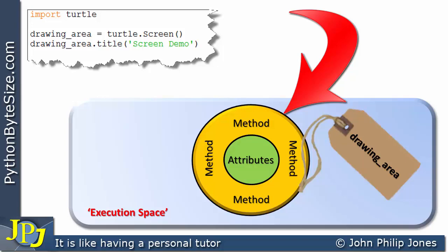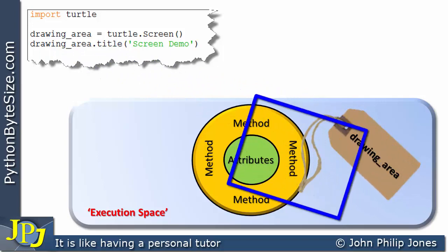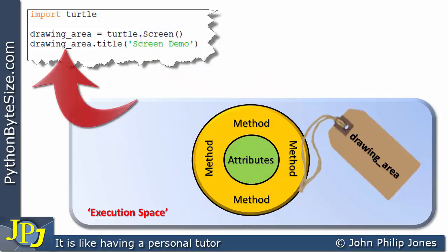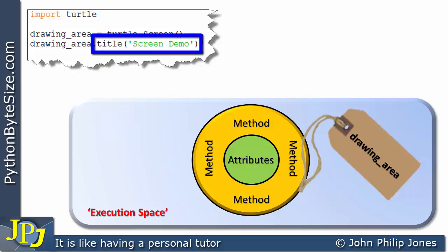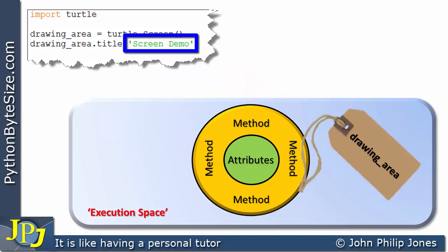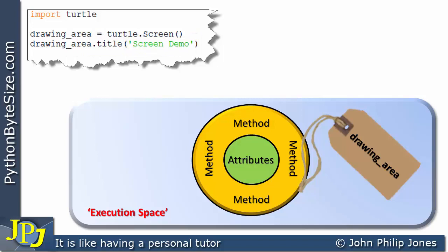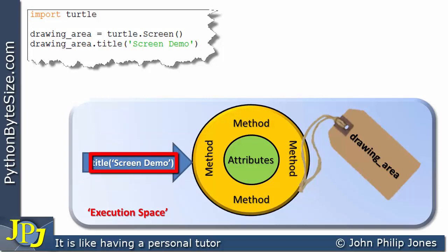As an object-oriented programmer, we now use the object. Let's refer to this line of code — this is an example of a message. This is referring to the object, because this is the name of the object, which is bound to this object here. Following this name, you can see we have the full stop — dot notation. This is going to invoke the title method that's part of this object, and we can see we're passing in 'screen demo' as a string. So we're sending to this object this message to invoke this method, passing this in as the argument.